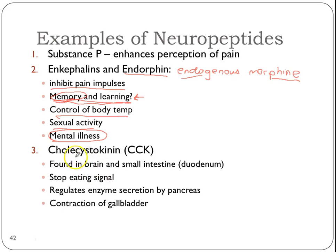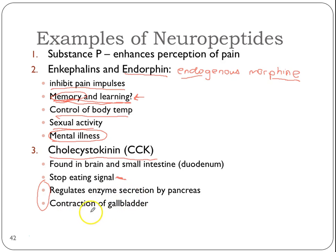Different mental illnesses will have many different causes — the end result may be the same, but there can be many different underlying causes. This is why they're sometimes so hard to treat, because you don't really know what the underlying cause is. The best thing doctors can usually do is prescribe a number of different drugs and hopefully one works. Another neuropeptide is CCK — cholecystokinin. It's found in the brain and small intestine and is your stop-eating signal. It also regulates enzymes and contractions of the gallbladder as part of its digestive function.